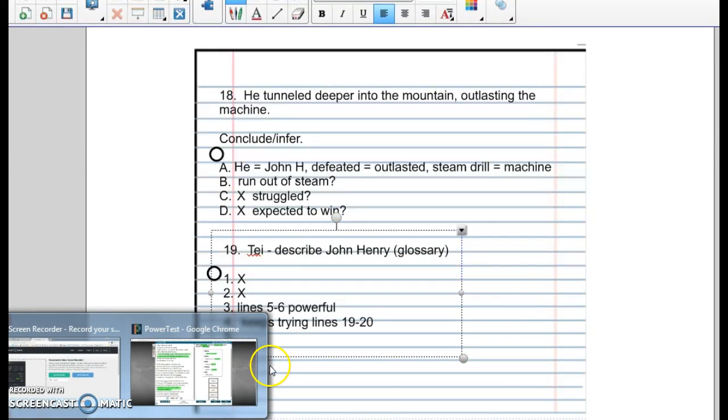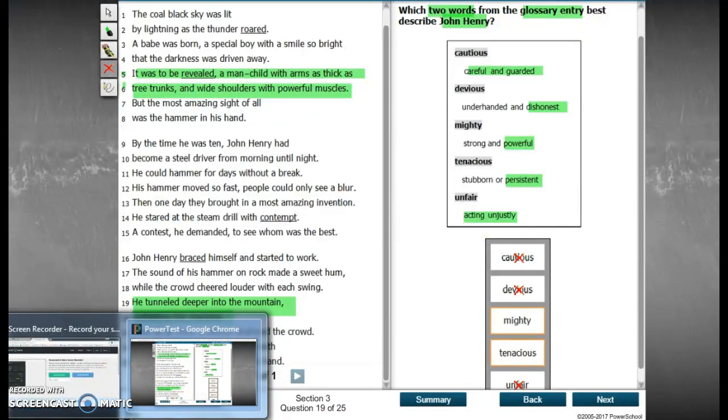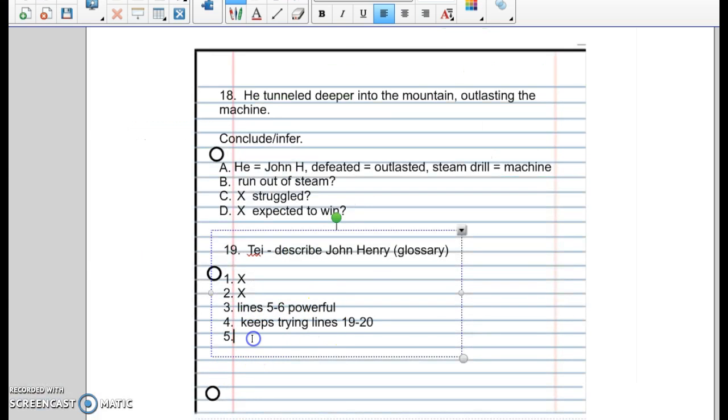And then the last choice was, and it said there were two. So I'm thinking we're done, but we always want to check it. Unfair. Well, unfair kind of reminds me of being dishonest. I don't see anything where he is being unfair, where he's cheating or acting unjustly. No evidence for that one. The answers are mighty and tenacious. We have our proof. So you should choose three and four. Okay. That's it for number 19.